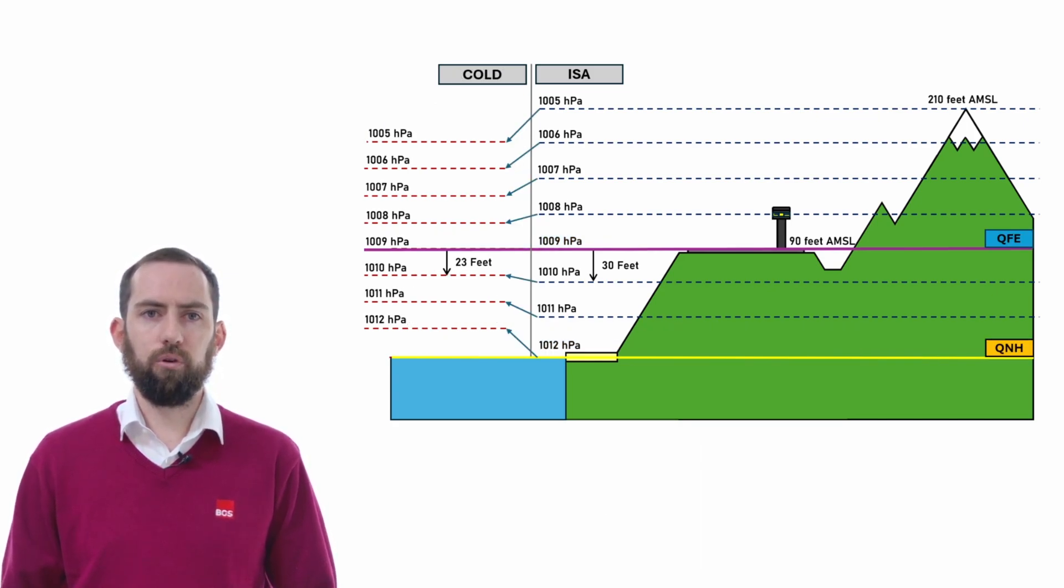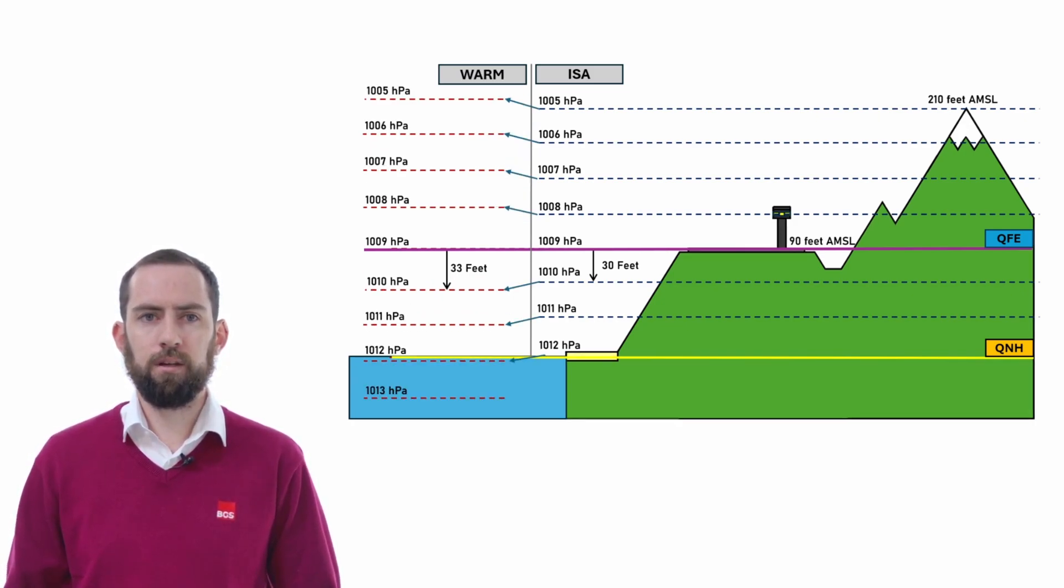As a summary, I want to draw your attention to how the pressure planes change within an atmosphere that is colder than ISA. Take note of how the error propagates either side of the QFE. Keep in mind that this error will create the reverse problem in an atmosphere that is warmer than ISA.